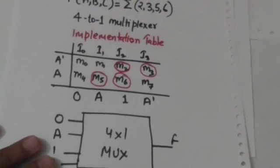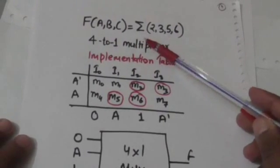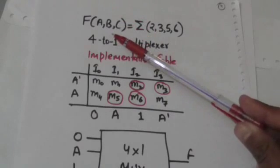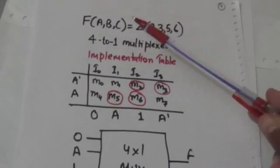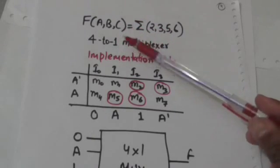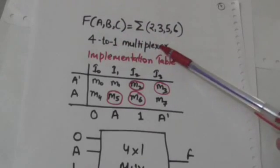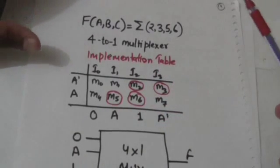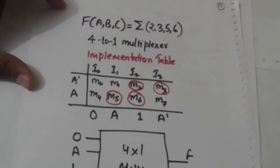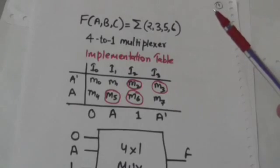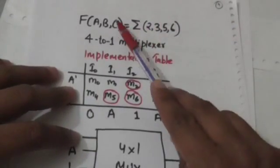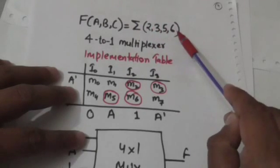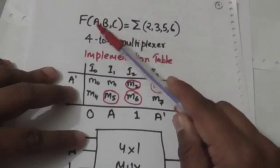It would be more clear when we implement this boolean function by a multiplexer. This boolean function f is of three binary variables a, b, and c, so it would be implemented by a 4 to 1 multiplexer — that is, a multiplexer which has four input lines and two selection lines. This function is a sum of minterms m2, m3, m5, and m6, and the order of variables in minterms is a, b, and c.